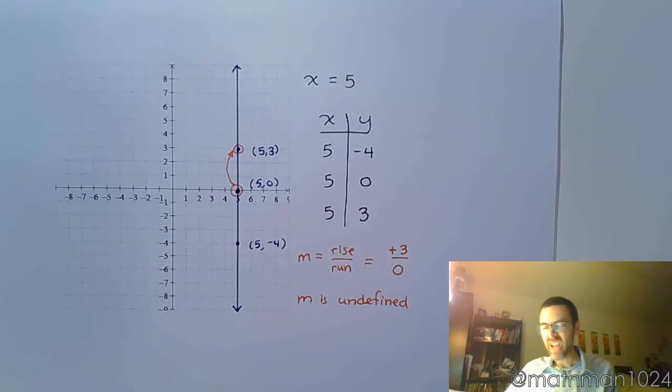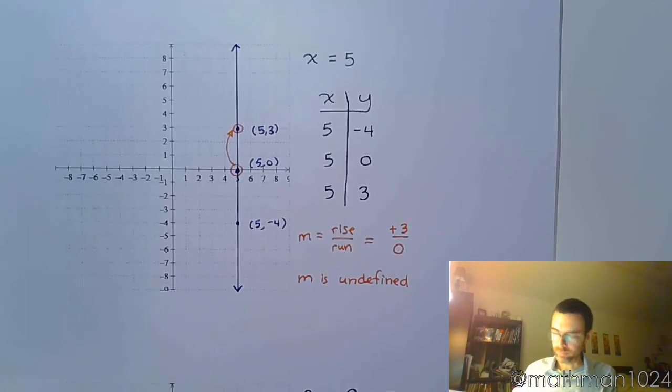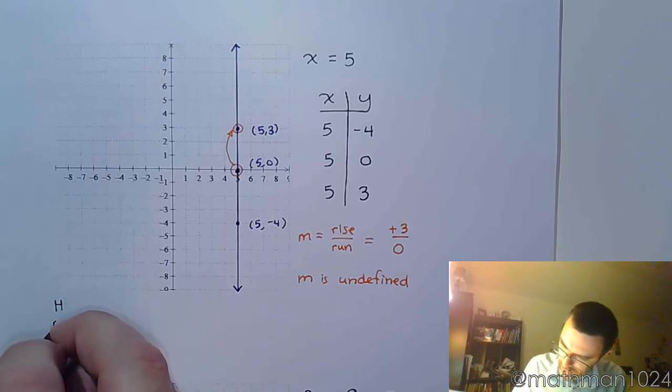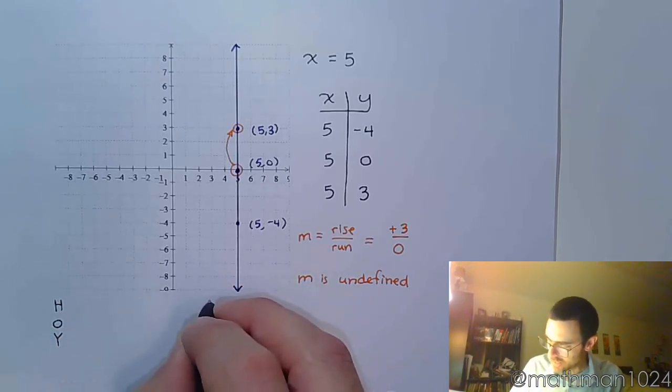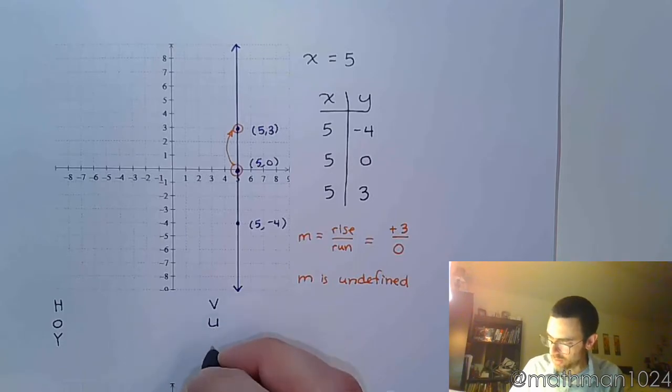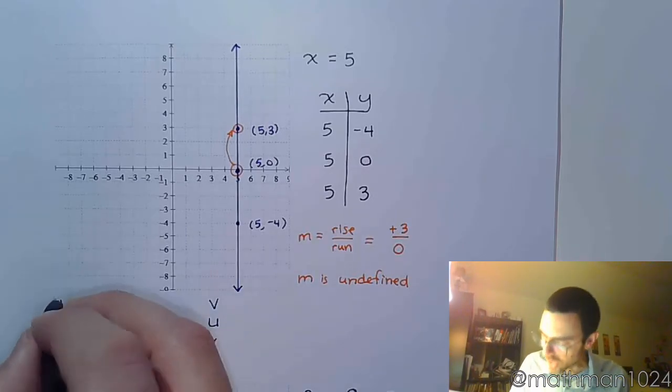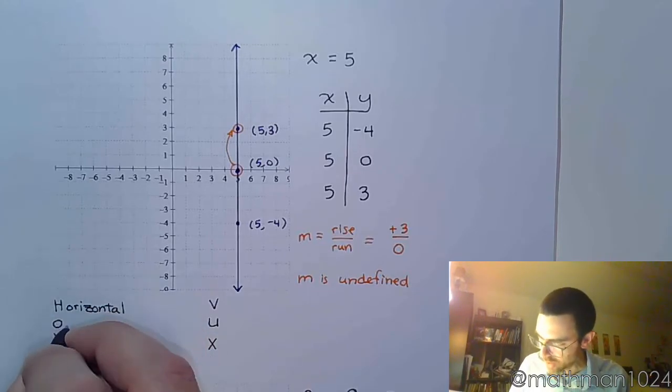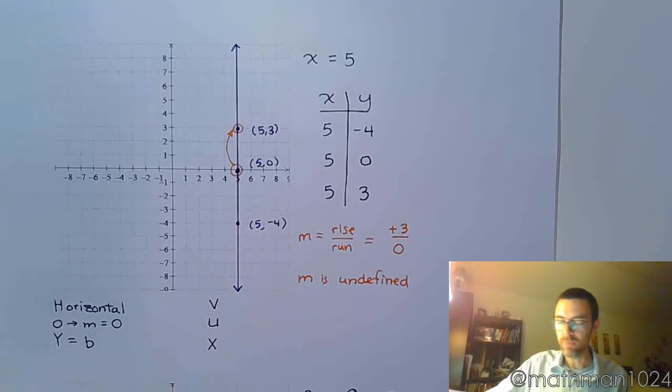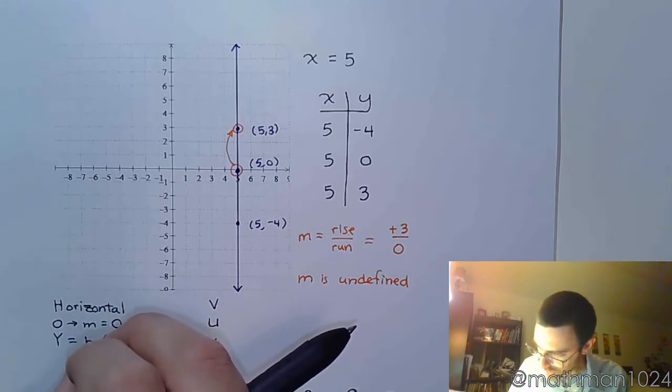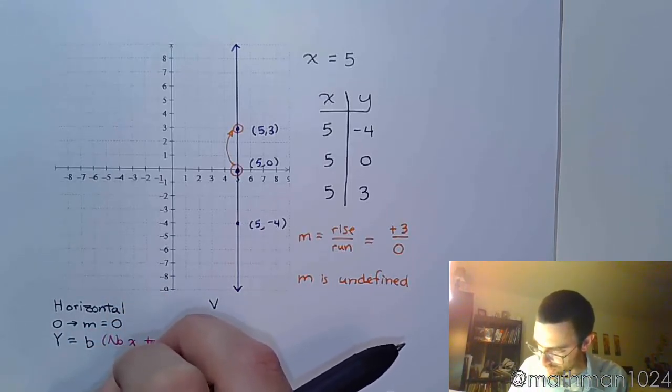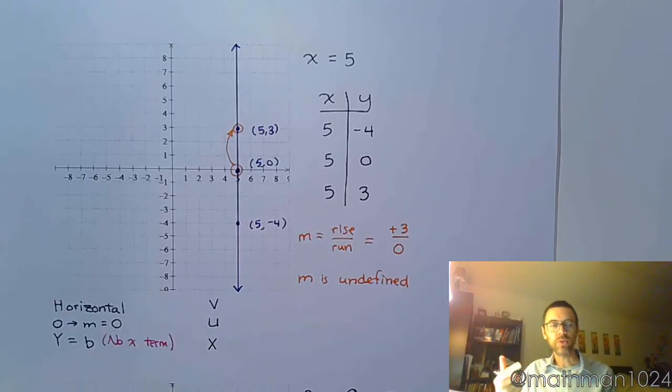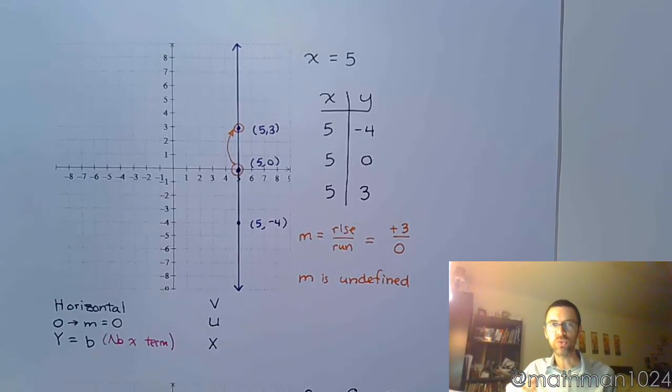Now, there's a little acronym of sorts to help us out with these kinds of equations. So, h, o, y, and v, u, x. So, h stands for having horizontal lines. So you're going to have a horizontal line. And that means that the slope is going to be 0. And this happens when you have just y equals b. And there is no x term. So horizontal lines have a slope of 0, and that's just when you have y. Just y.